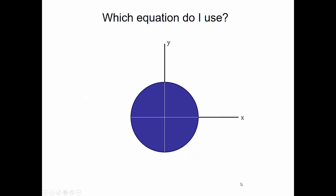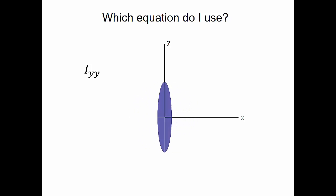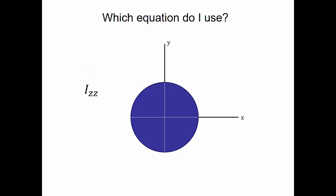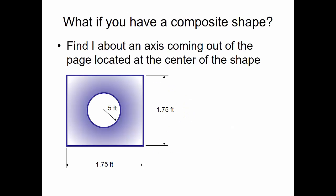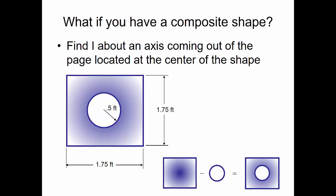Which equation do I use? For a flat disk, if I want the mass moment of inertia about the Y-axis, I find it as if the disk were rotating in that direction. About the Z-axis, coming out of the page, it rotates in a different direction. Depending on how the object rotates, we calculate the mass moment of inertia differently. For a composite shape — say a square plate with a hole — we find the mass moment of inertia of the square without the hole, then subtract the mass moment of inertia of the hole to get the composite result.